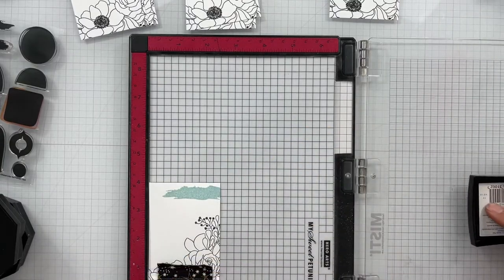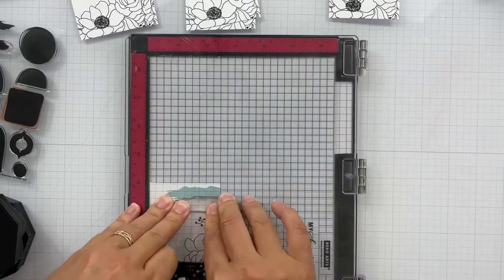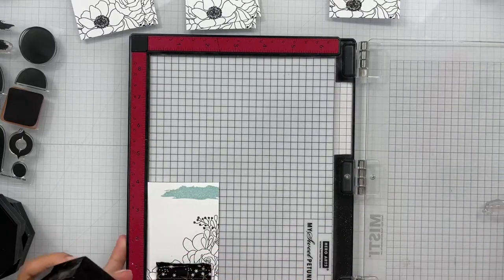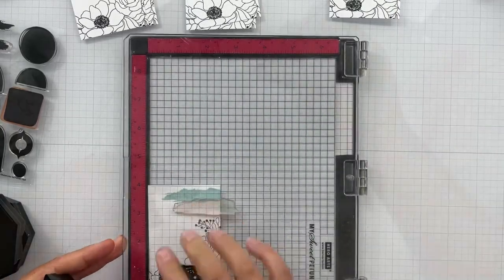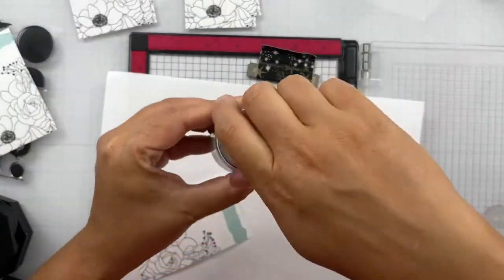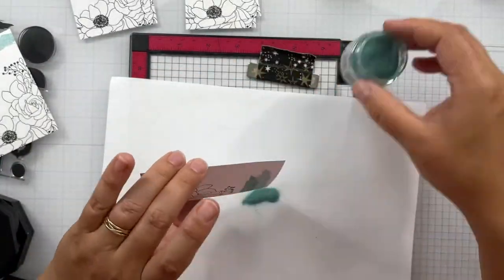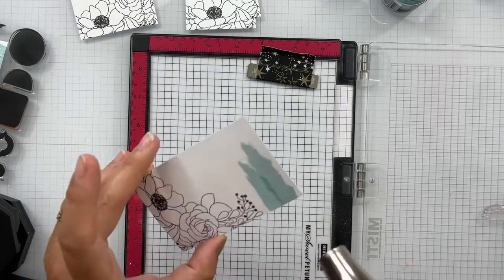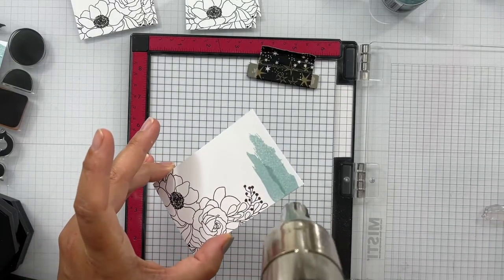Now the first time I forgot to use my anti-static powder tool before using the Versamark ink. So I made sure to do that here and through the rest of the panel. Now I'm not going to do all the stamping with you on camera. You can get the idea that I'm just giving some space in between and you see the layout from the photos.